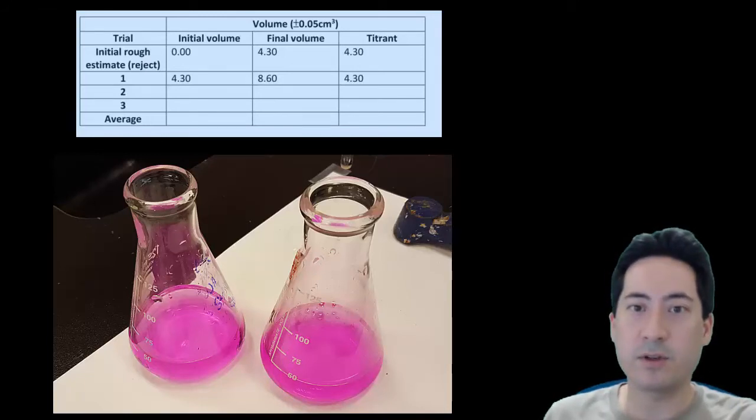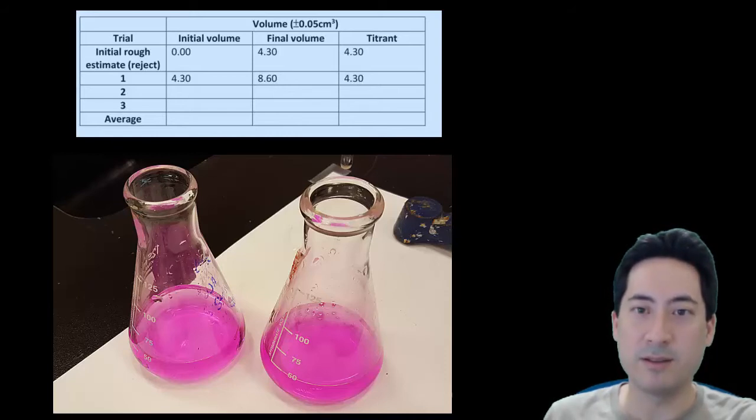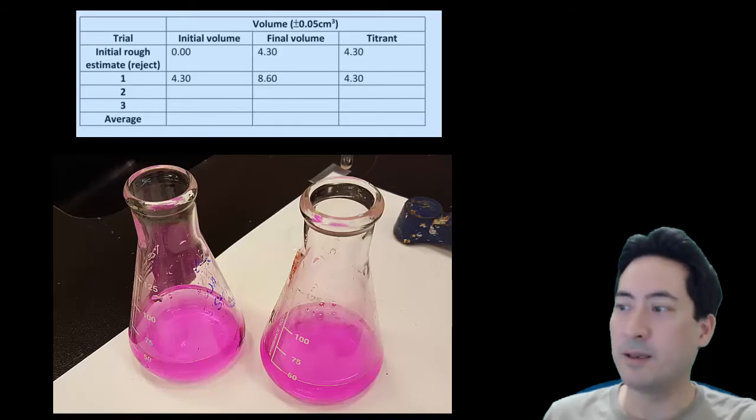These are the two titrations I did with the three molar acid. Now, because I knew what the concentration was from the first titration, my rough trial was fairly accurate straight away. I really went down to what the answer really should have been. And I got 4.30 both times. I got 4.30, then 8.60.